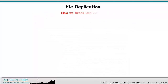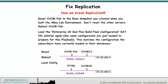Now we break replication. Reset CUCMPUB to the base snapshot you created when you built the ABAYLAB environment. Don't reset the other servers. Reboot CUCMPUB. Load the Enterprise 20 Dial Plan Build Final Configuration Bat File Solution again — the same configuration you just loaded to prepare for this playbook. This matches the configuration the subscribers have currently loaded in their databases.